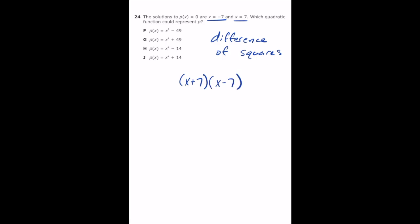So X times X is X squared. X times negative 7 is negative 7X. 7 times X is positive 7X. And 7 times negative 7 is negative 49. The negative 7X and the positive 7X are going to cancel and leave us with X squared minus 49. And that's going to be letter F.